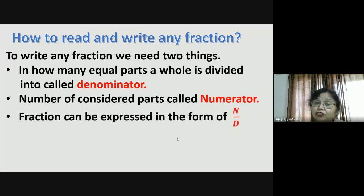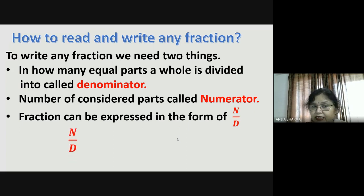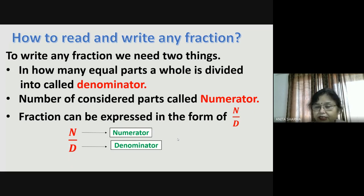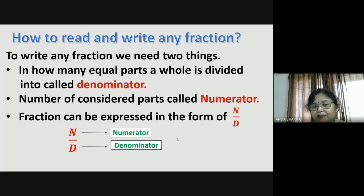A fraction can be expressed in the form of n by d, where n stands for numerator and d stands for denominator. Denominator we always write below the numerator — d for down. You can just remember it this way. The denominator we always write below the numerator: on the top is the numerator and below is the denominator.